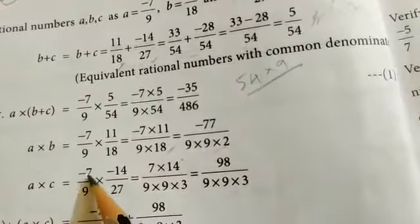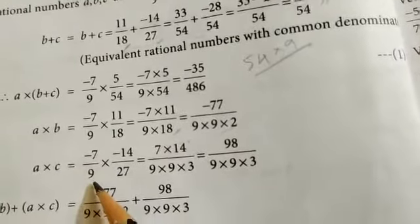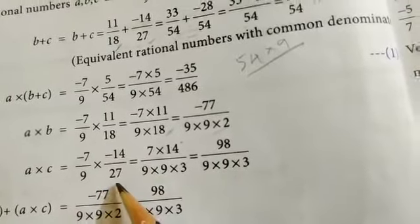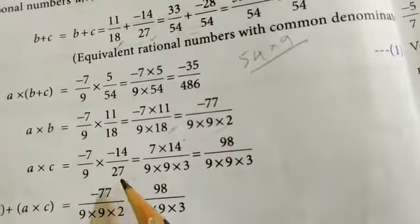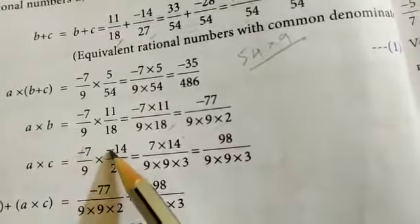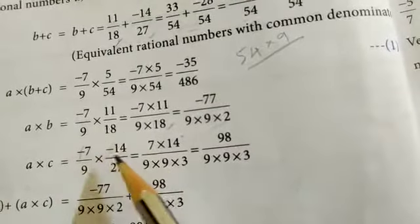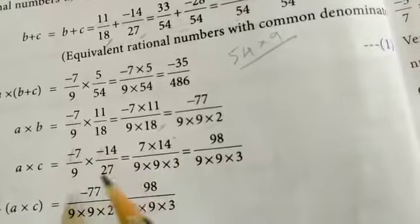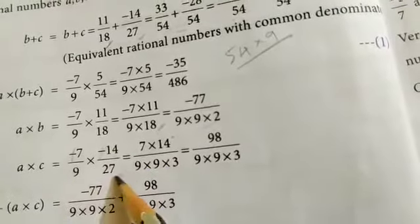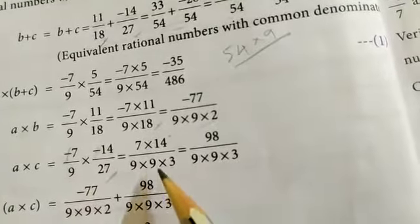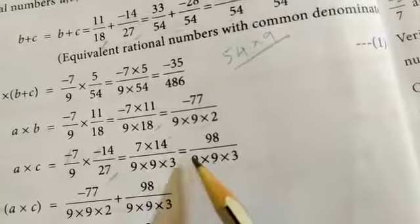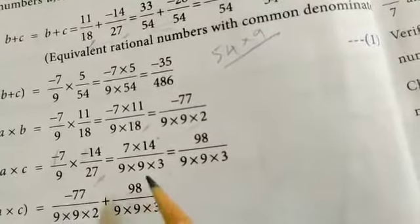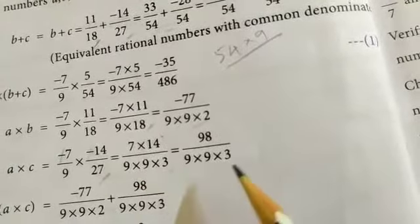Now A into C: A value minus 7 by 9 into C value minus 14 by 27. Minus times minus cancels, so 7 into 14 by 9 into 27. 14 into 7 gives 98, and 9 into 27 gives 243. So A into C equals 98 by 243.